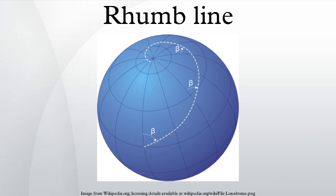Some old maps in the Mercator projection have grids composed of lines of latitude and longitude but also show rhumb lines which are oriented directly towards North, at a right angle from the North, or at some angle from the North which is some simple rational fraction of a right angle. These rhumb lines would be drawn so that they would converge at certain points of the map, with lines going in every direction converging at each of these points. Such maps would necessarily have been in the Mercator projection, therefore not all old maps would have been capable of showing rhumb line markings.